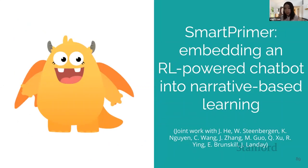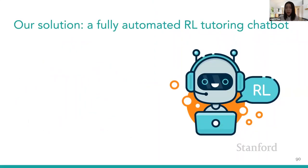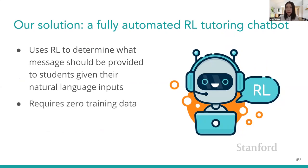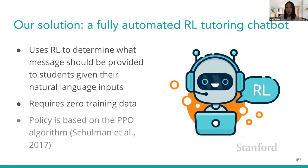Now I'm going to present the last system I built, which achieves the goal of automating the chatbot. The solution I adopted was reinforcement learning. I used RL to determine what kind of message should be provided to students given their natural language inputs. The RL chatbot required zero training data and performed online learning, with a policy built using the proximal policy optimization algorithm.